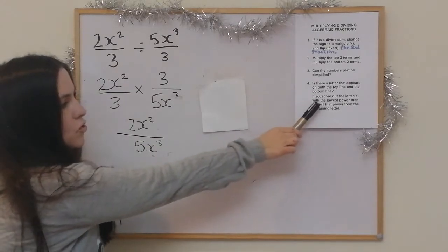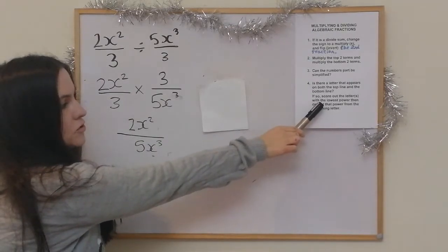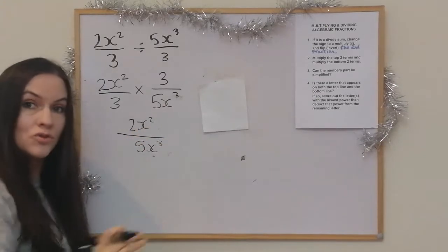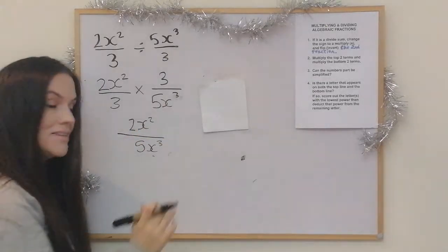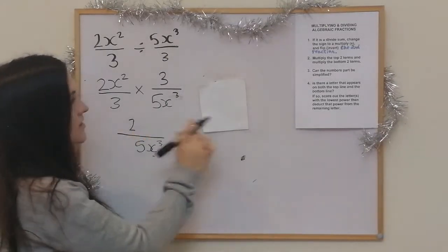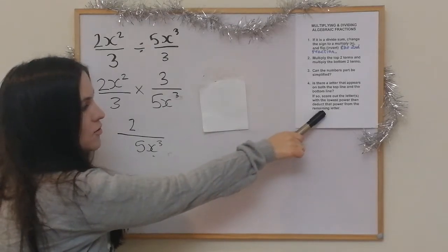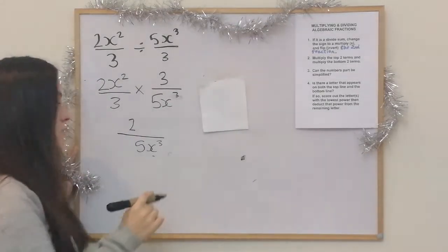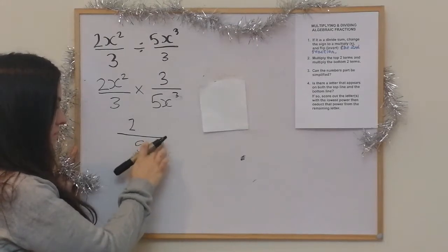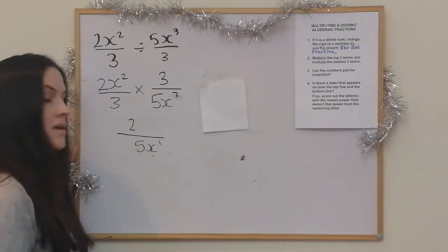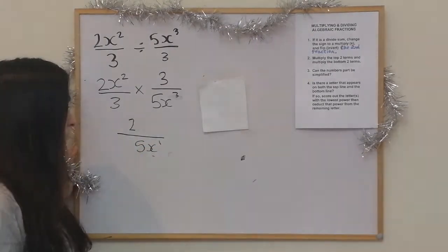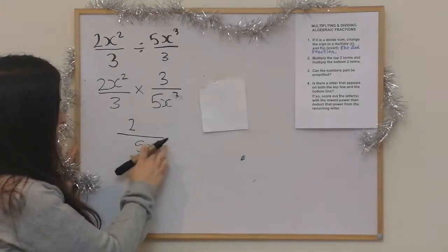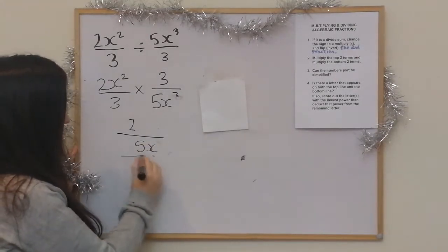It says if so, score out the letter with the lowest power, which would be x squared. So I score that out, and then deduct that power from the remaining letter. It was a 2, so I deduct 2 from 3 and get 1. So it's 2 over 5x to the power of 1, which I can just write as 2 over 5x. That's our final answer.